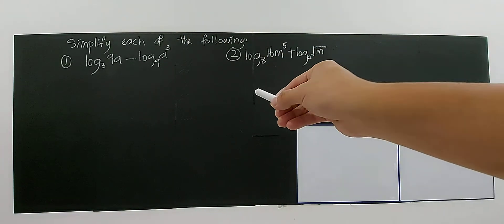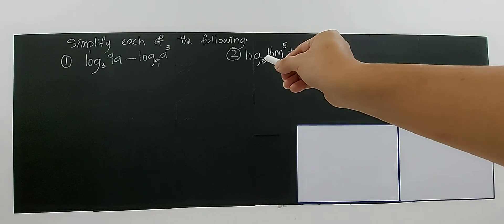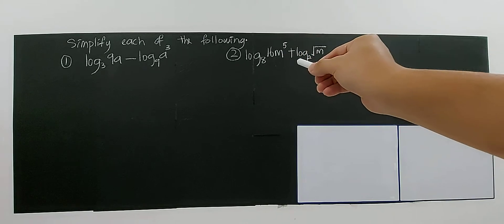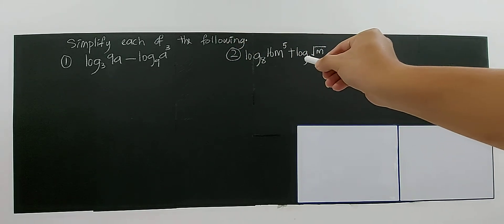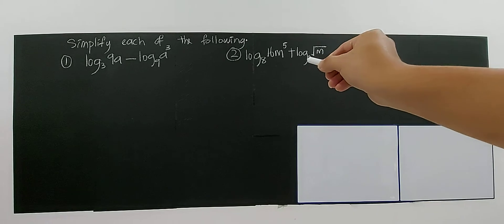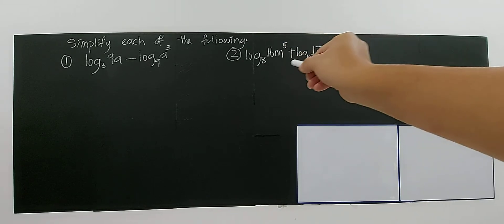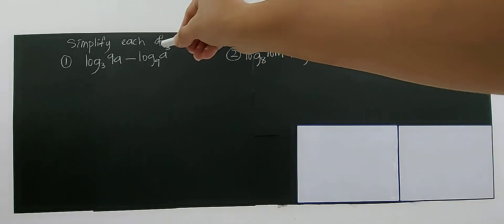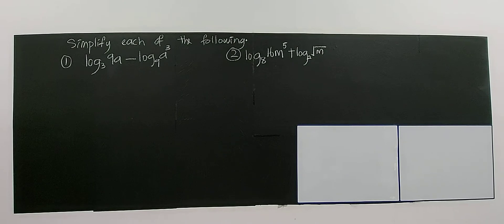For this one it's also the same — you have base 8 and this one has base 2. If you only use the change-of-base formula to simplify, and you see that the bases are not the same, you cannot add, you cannot divide because the bases are different. So at first you need to apply the change of base.